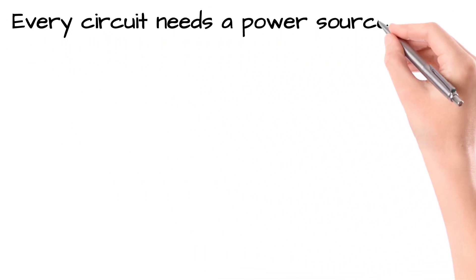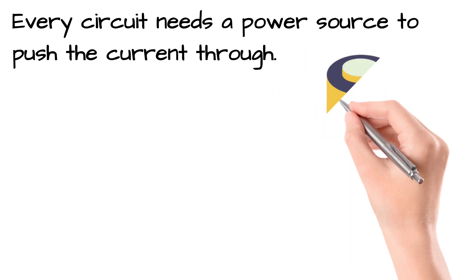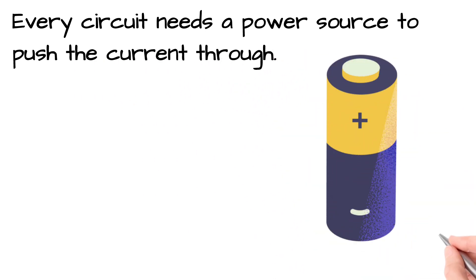Every working circuit starts with a power source, like a cell or battery. It gives the push, or voltage, that moves the electric charges through the wires and into the components.